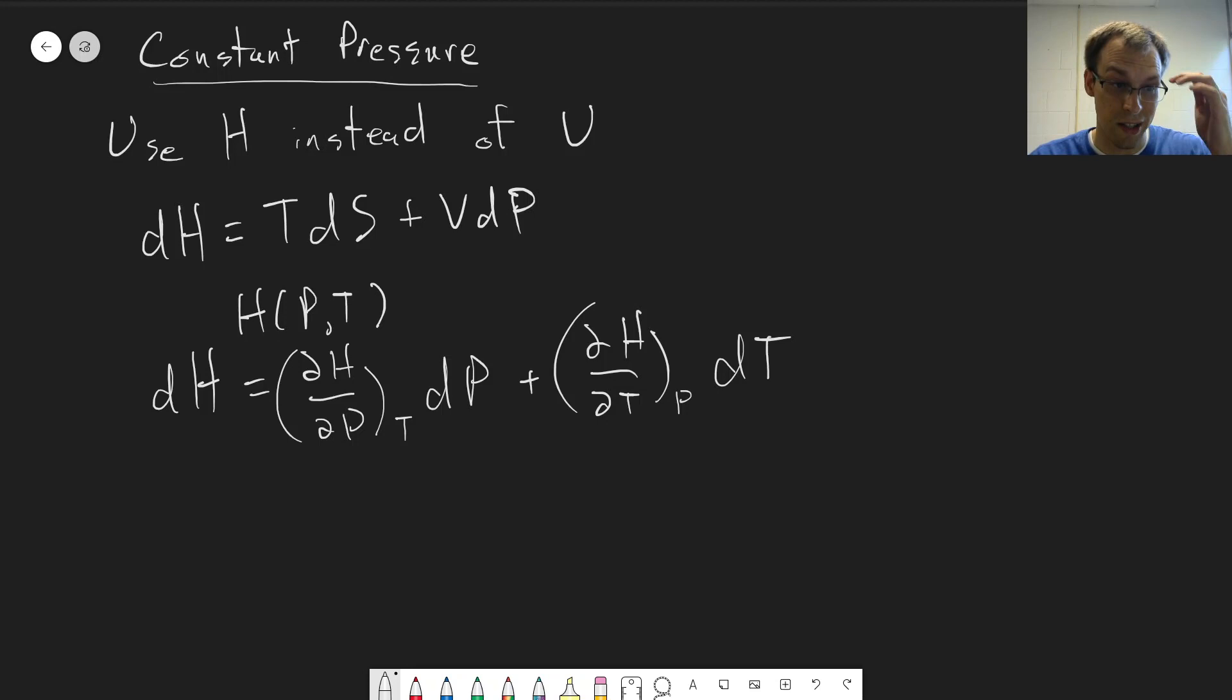And again, we're going to do the same thing we did last time. We're going to solve for dS in this expression here and set it equal to all these. Set these two expressions equal to each other. Solve for dS and write out the total differential of dS. Again, it's a function of temperature and pressure this time instead of volume because we're considering a constant volume process.